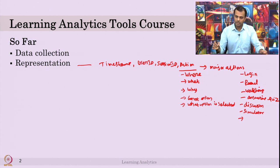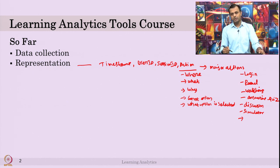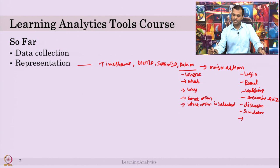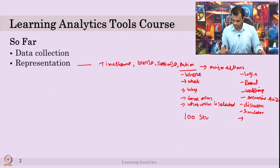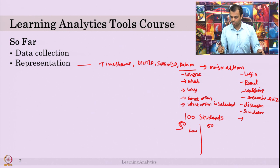These are the major actions, then contextual information. The first step when you do the analysis is to plot these actions' frequency — the number of times each action occurs for each student on average — and the time they spend on each of these actions. For example, if you have 100 students, and you see 50 are low performers and 50 are high performers based on pre-test and post-test scores.